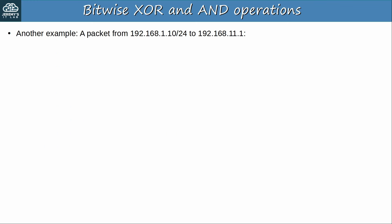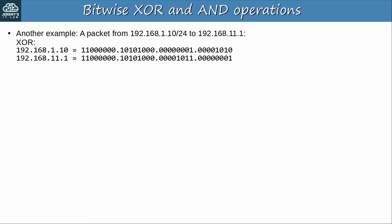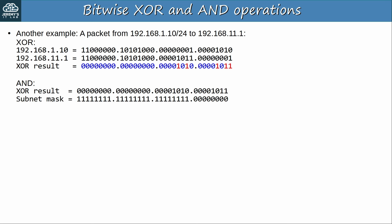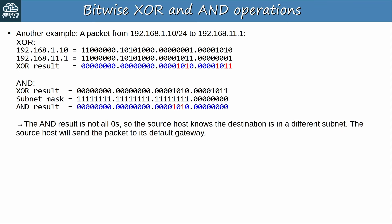Let's do another example where the destination is not in the source host's subnet — from source 192.168.1.10/24 to destination 192.168.11.1. Here are the two IPs in binary. Comparing them with XOR, we have identified which bits are different. The next question is whether those different bits are in the host portion or network portion. Using AND to compare the XOR result and the source host's subnet mask, the result has some ones. Because the AND result is not all 0s, the source host knows the destination is in a different subnet, so it will send the packet to its default gateway.